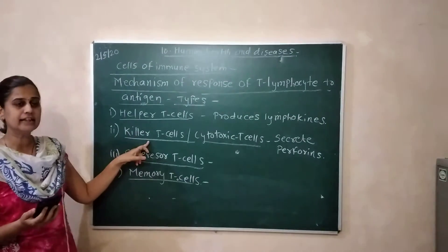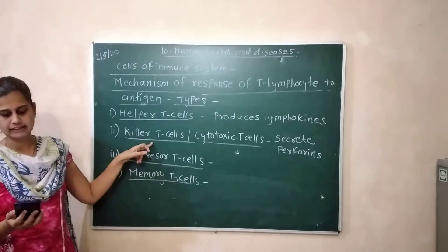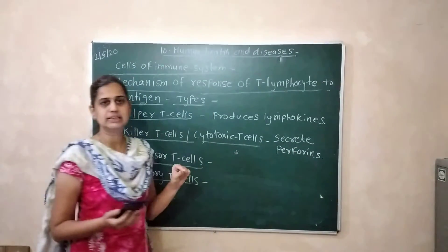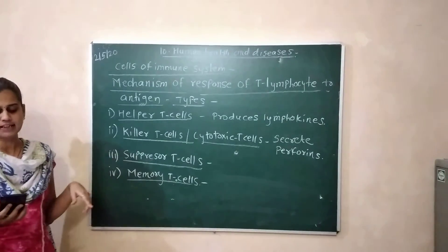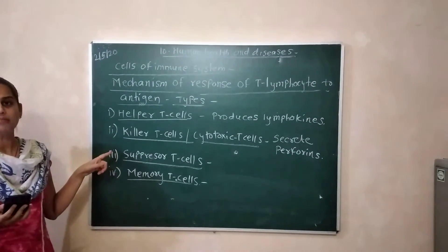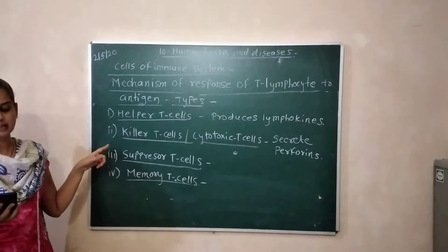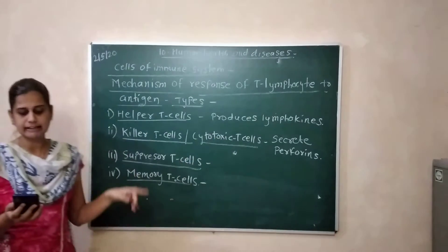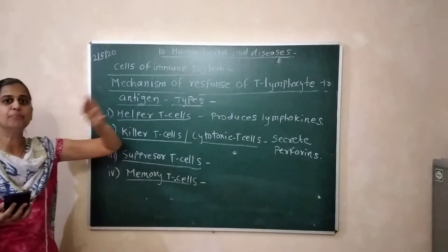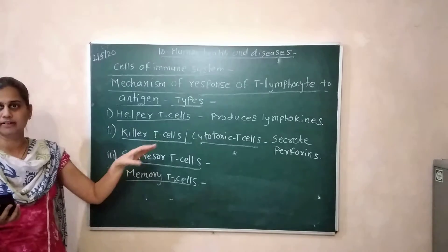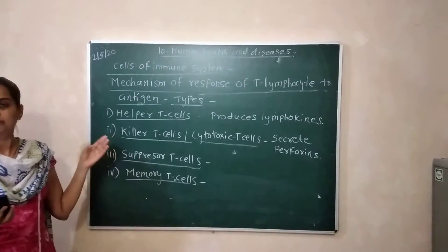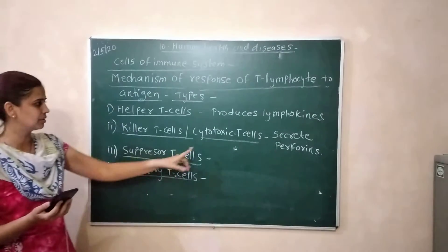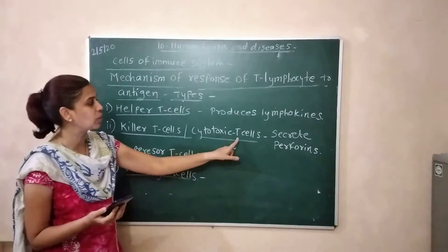How do cytotoxic T-cells destroy targets? They secrete a protein called perforin. This perforin forms pores in the membrane of infected cells, releasing substances that kill those cells. Hence the name cytotoxic T-cell — they are toxic to infected cells.